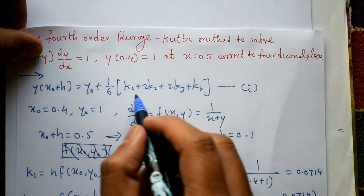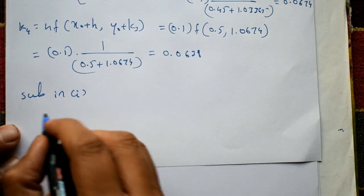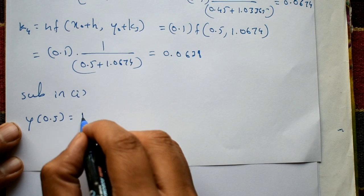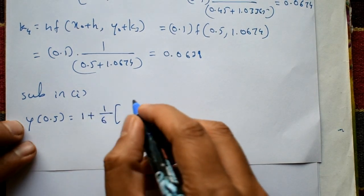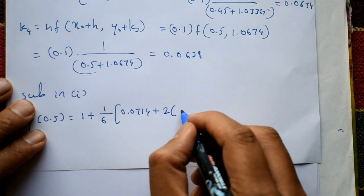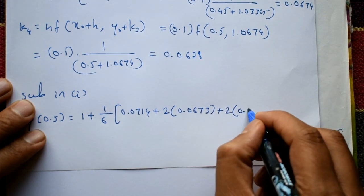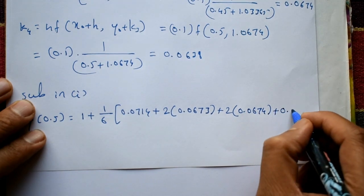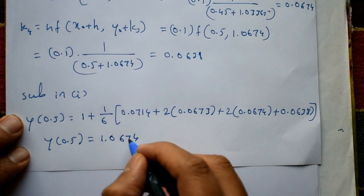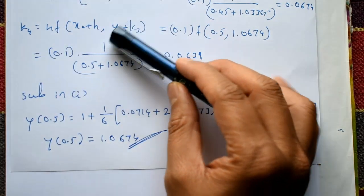Substituting all values into equation 1: y(0.5) = 1 + (1/6)(0.0714 + 2×0.0673 + 2×0.0674 + 0.0638). The required solution is y(0.5) = 1.0674. Please subscribe to my channel, like, and comment. Thank you.